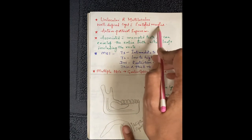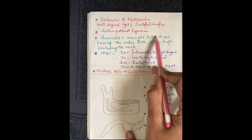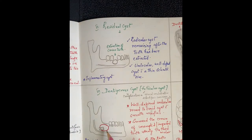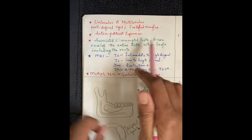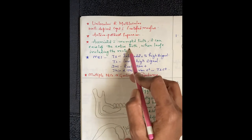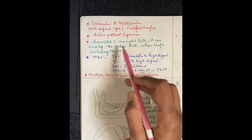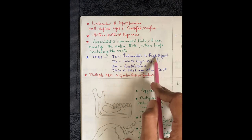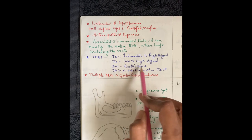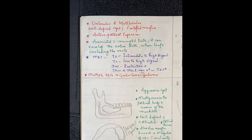The odontogenic keratocyst is also associated with an unerupted tooth — a differential with dentigerous cyst. However, when large it can envelope the entire tooth including the roots. On MRI, T1 is intermediate to high signal, T2 is low to high signal, diffusion restriction is present, and thin or thick rim enhancement is present on contrast.